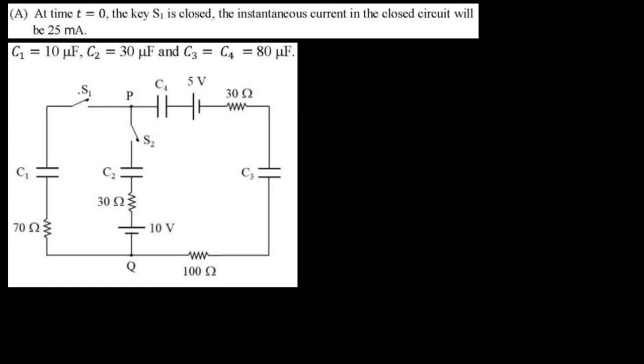Option A says: at time t = 0, switch S1 is closed — the instantaneous current in the closed circuit will be 25 milliampere. Just before closing switch S1, the capacitors were uncharged, and charges on capacitors do not change suddenly if there is a resistor in series. Capacitors C1, C3, and C4 have resistors of 30 ohm, 100 ohm, and 70 ohm in series, so the charges just after closing S1 remain zero. Therefore the potential difference across these capacitors is zero, and we can replace them with conducting wires.